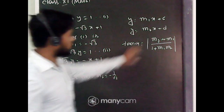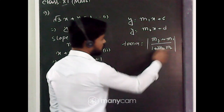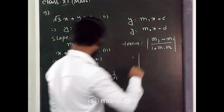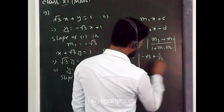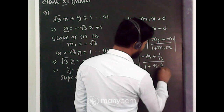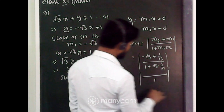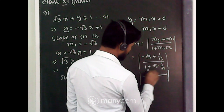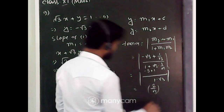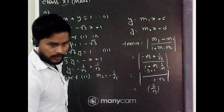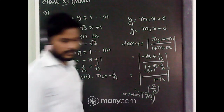Now applying the formula: tan α = |(m₂ - m₁) / (1 + m₁m₂)| = |(-√3 + 1/√3) / (1 + √3 · 1/√3)|. The denominator becomes 1 + 1 = 2, and the numerator simplifies to 2/√3... wait, let me recalculate — actually tan α = 1/√3.